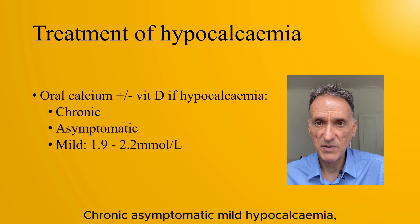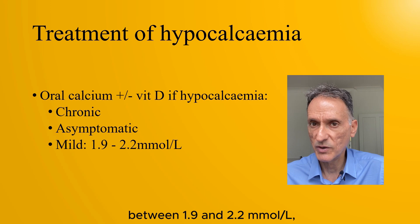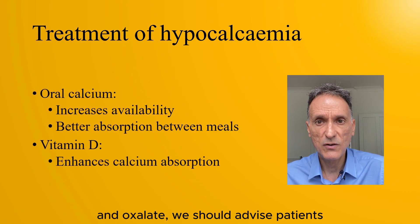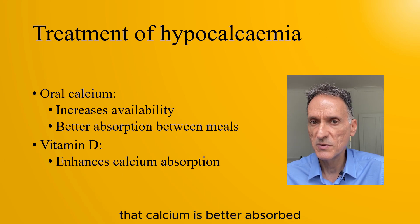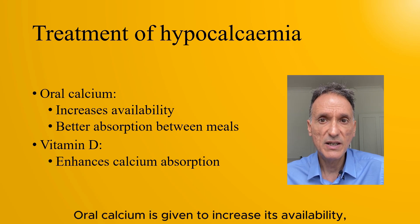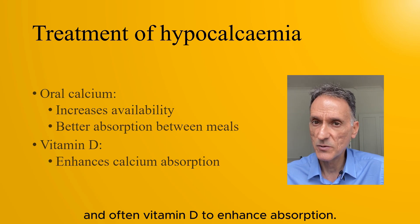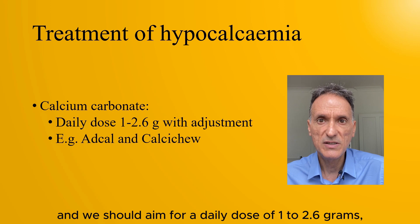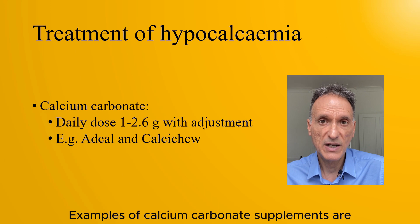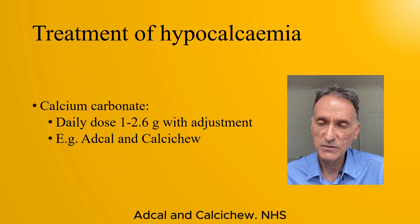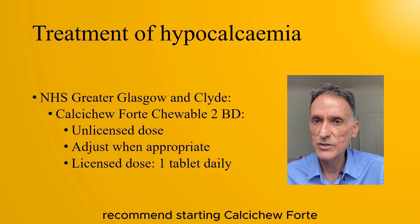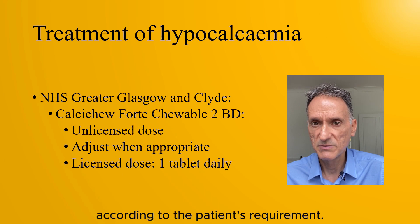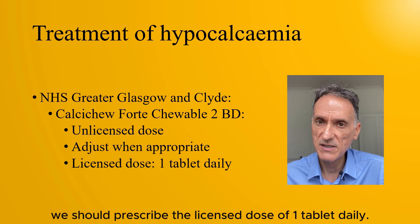Chronic asymptomatic mild hypocalcemia — that is, serum-adjusted calcium between 1.9 and 2.2 — is treated with oral calcium and often vitamin D supplements. Because calcium binds with dietary phosphate and oxalate, patients should be advised that calcium is better absorbed when taken between meals. Calcium carbonate is widely available in tablet form, and we should aim for a daily dose of 1 to 2.6 grams, adjusting according to response. Examples of calcium carbonate supplements are Adcal and Calcichew. NHS Greater Glasgow & Clyde recommends starting Calcichew 500mg chewable, two tablets twice a day — which is an unlicensed dose — adjusting according to the patient's requirement, with the aim to prescribe the licensed dose of one tablet daily as soon as appropriate.